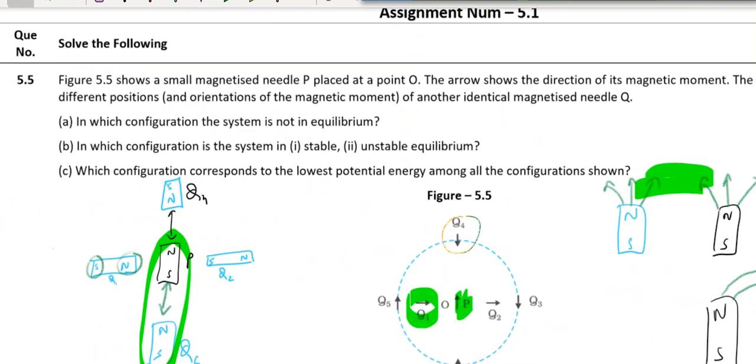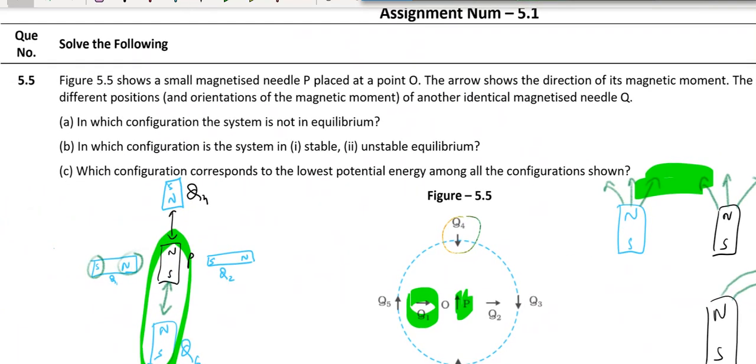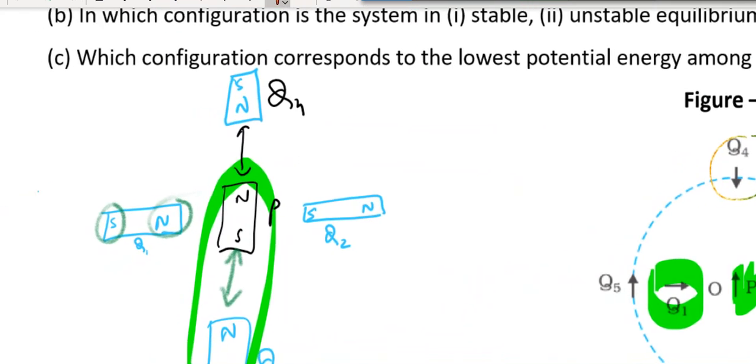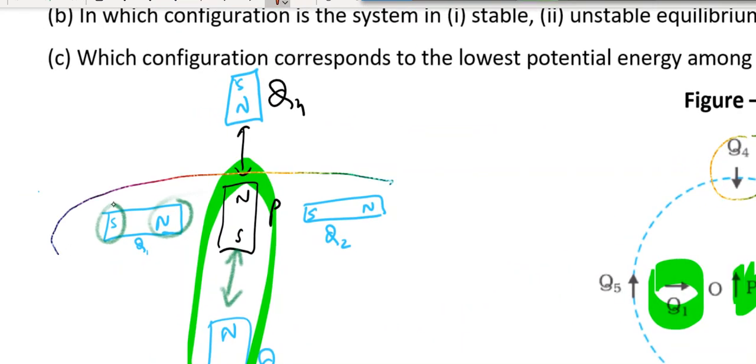So what are the questions? In which configuration system is not in equilibrium? So system is not in equilibrium for these two conditions of pq1 and pq2. These are the conditions where equilibrium cannot be expected.